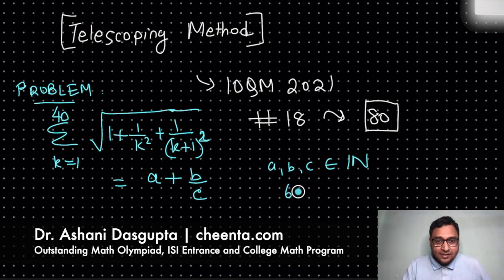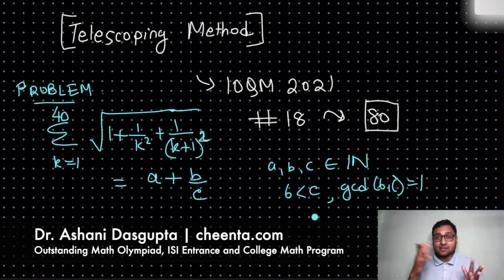So b is less than c, it's a proper fraction, and the GCD of b and c is equal to 1, which basically means that you have cancelled off what you could cancel and you have it in the reduced form.